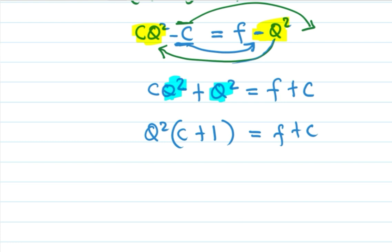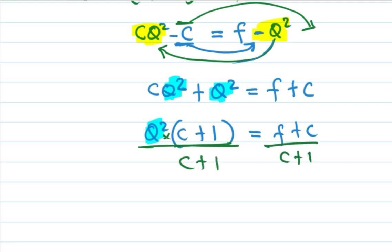Since our mission is to make Q the subject of the formula, we remove this bracket by dividing both sides. This term and that term will cancel, leaving Q squared equals (F plus C) over (C plus 1).